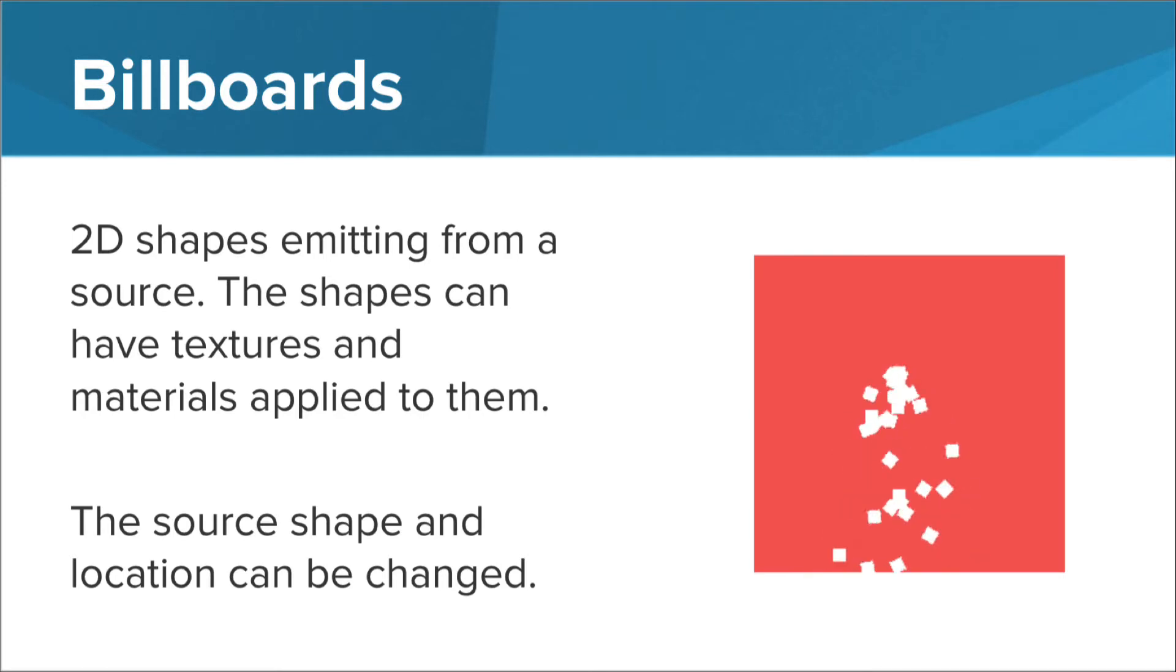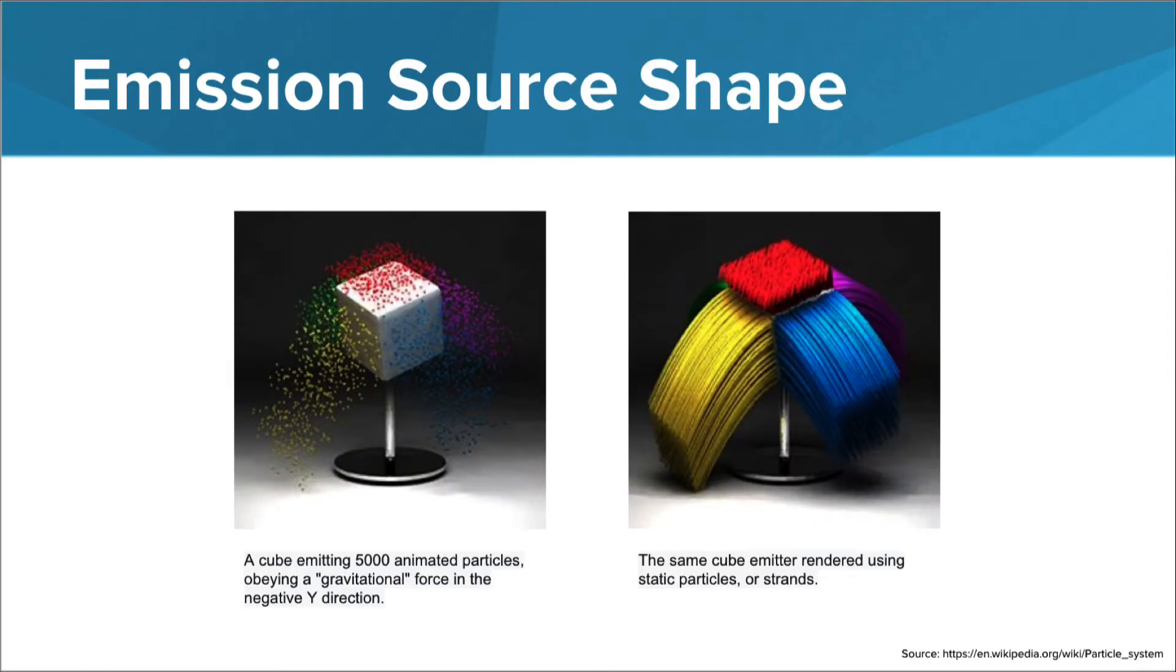Let's take another look at the source shape. Usually invisible, but shown in these images, the source shape tells the renderer where the particles should begin emitting. On the left, you see 5,000 particles falling from the surfaces of the cube's source shape. On the right, those exact same particles are falling from the surfaces of the cube, but creating strands rather than random particles.